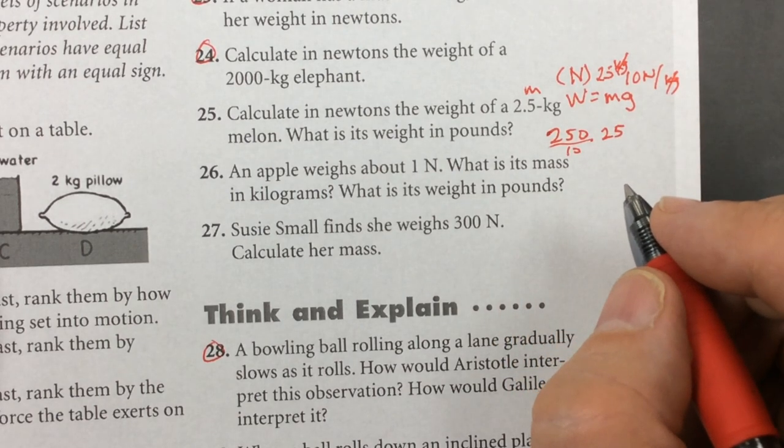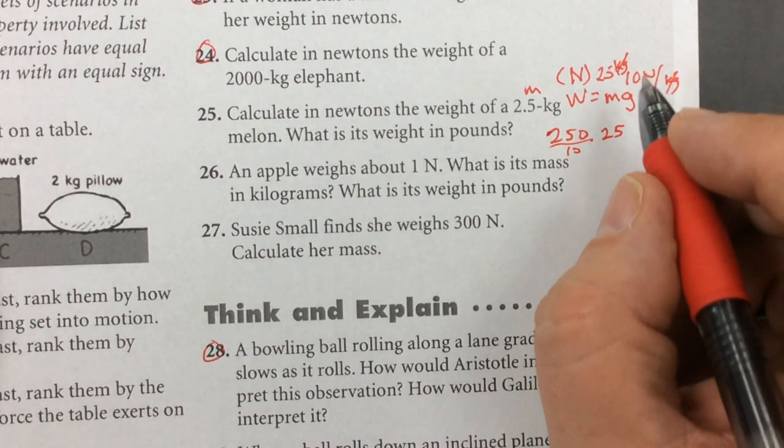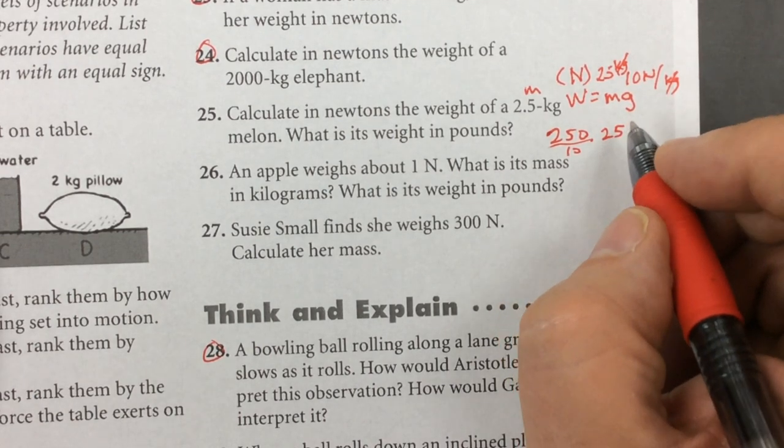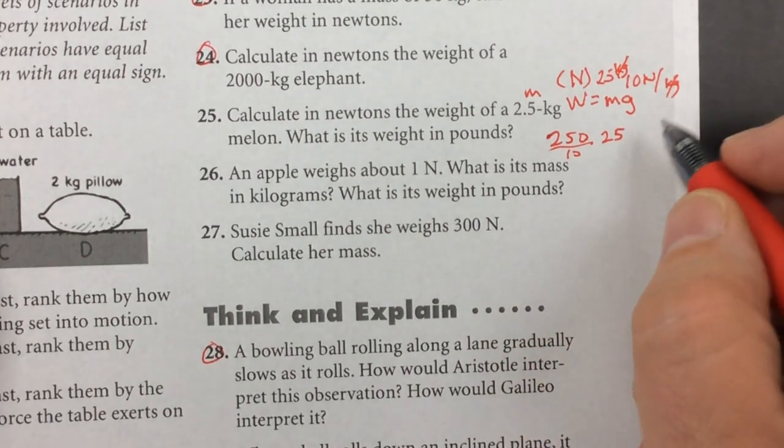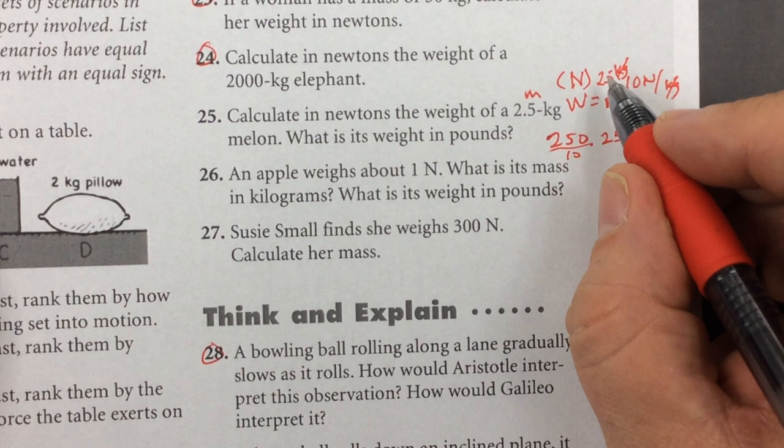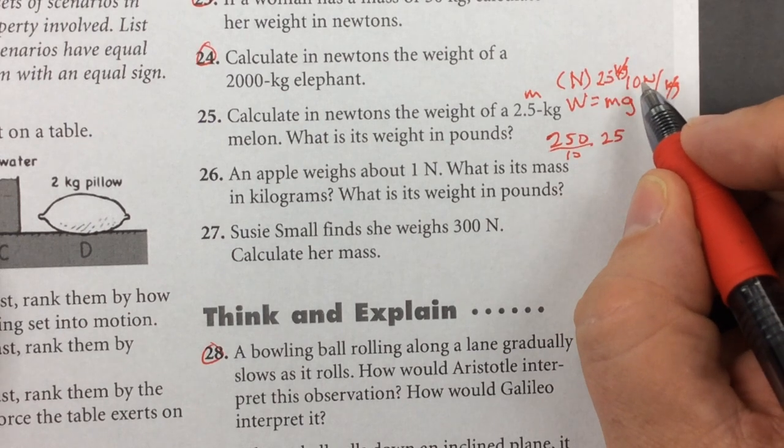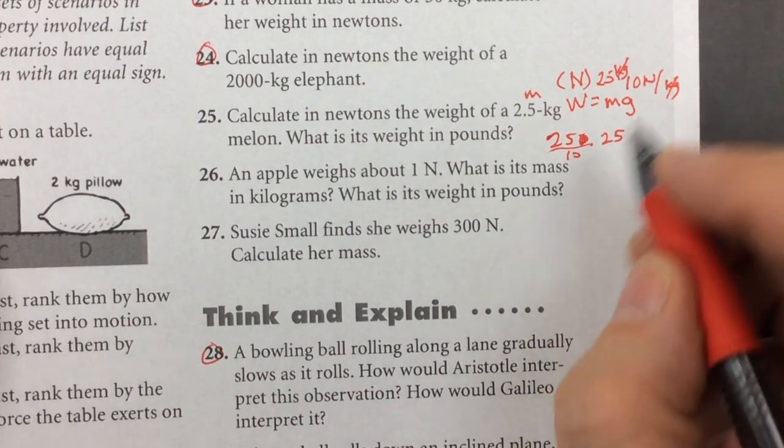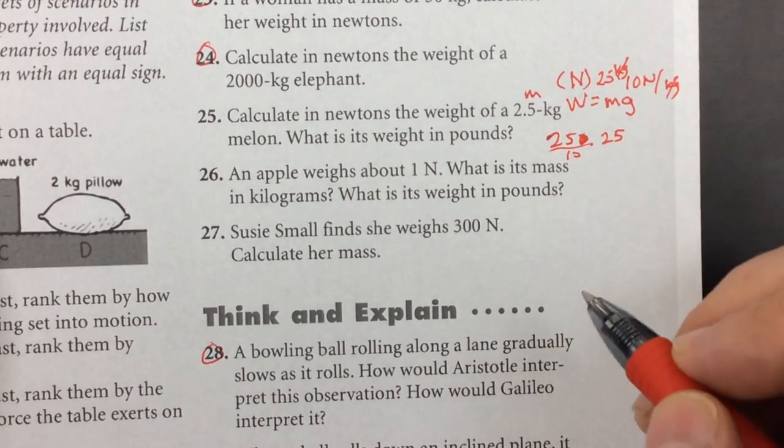Have I made a mistake? Maybe I didn't put my decimal point. This was 2.5 times 10 is not 250, it's 25. I'm sorry about that, because there should have been a decimal there.